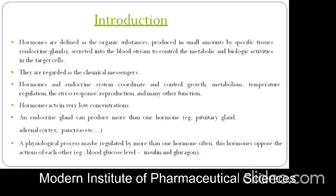Hormones are mainly dependent on the adrenal cortex, involving both endocrine and exocrine systems. They act in very low concentrations yet have significant effects. An endocrine gland can produce more than one hormone — such as the pituitary gland, adrenal cortex, pancreas, thymus, and thyroid. A physiological process may be regulated by more than one hormone, such as blood glucose levels regulated by insulin and glucagon, which is important for glucose metabolism in the liver and pancreas.